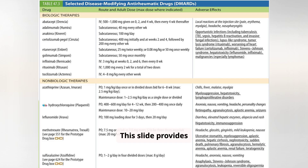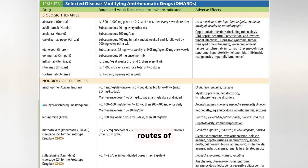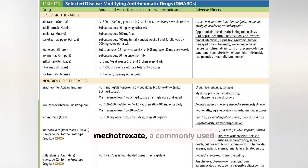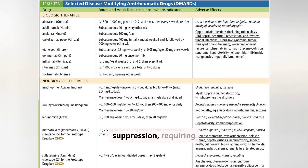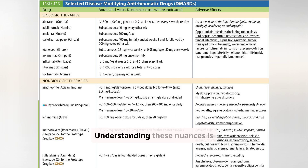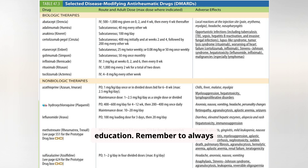This slide provides a detailed overview of selected DMARDs, both biologic and non-biologic. It's crucial to be familiar with the routes of administration, typical adult doses, and potential adverse effects of each drug. For example, methotrexate, a commonly used non-biologic DMARD, can cause liver toxicity and bone marrow suppression, requiring careful monitoring. Biologic DMARDs like etanercept can increase the risk of infection. Understanding these nuances is essential for safe and effective prescribing and patient education. Remember to always consult the most up-to-date prescribing information for complete details.